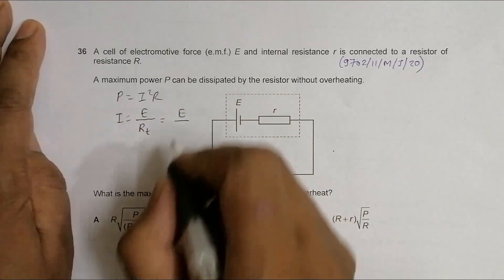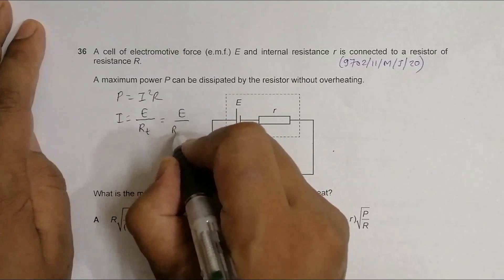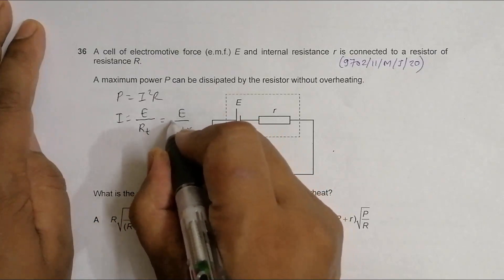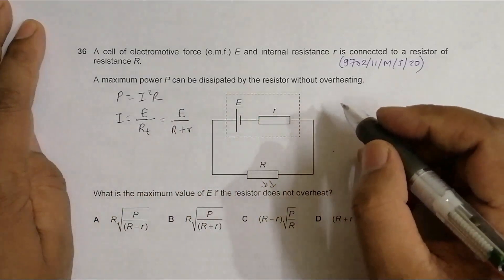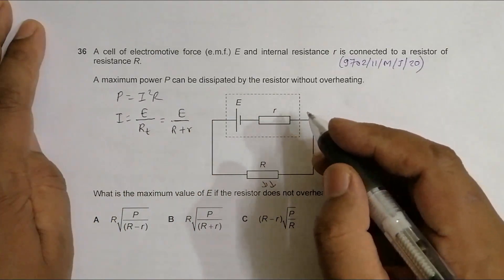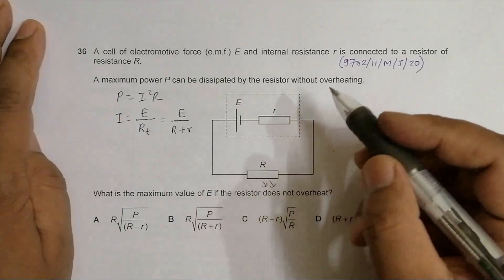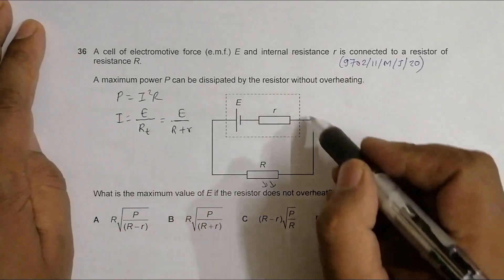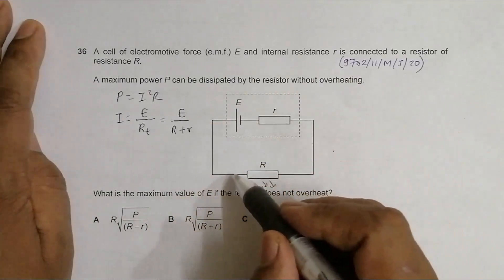Total R will be equal to R plus r. One thing that we have to remember is that they might look like parallel, so many students are confused over this, but it's in series because it lies in the same chain.